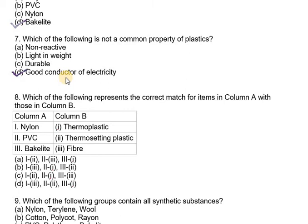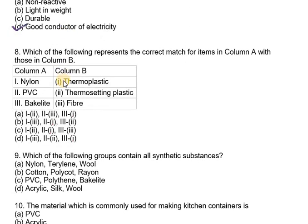Question number eight says which of the following represents the correct match for items in column A with those in column B? So we have column A: nylon, PVC, bakelite. Nylon matches with fiber.